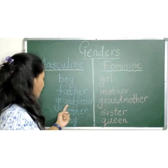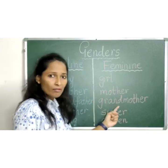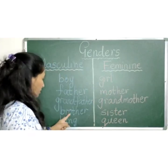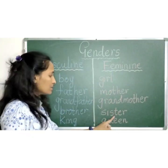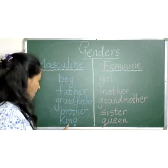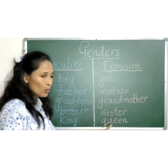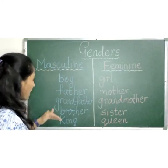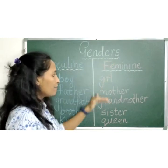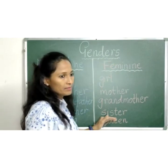Grandfather — grandmother. Brother — sister. King — queen. These are masculine and these are feminine.